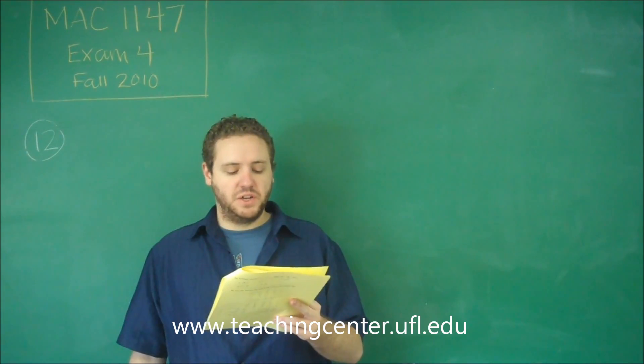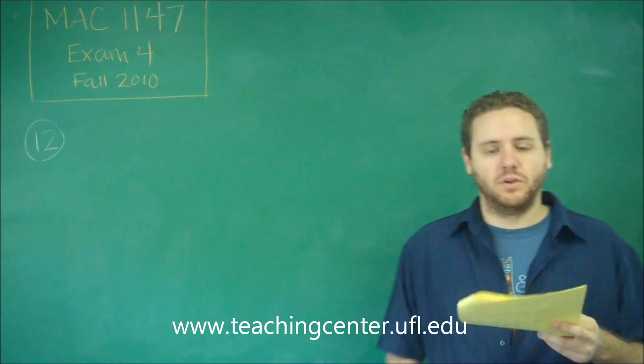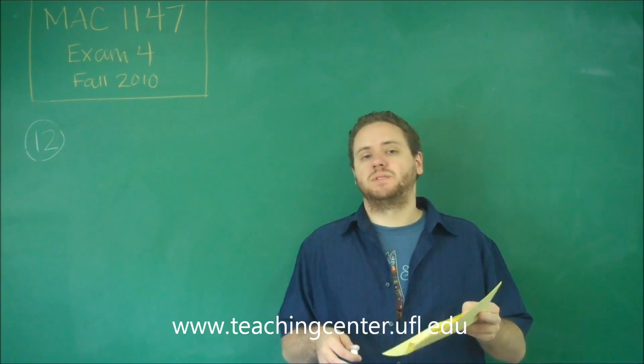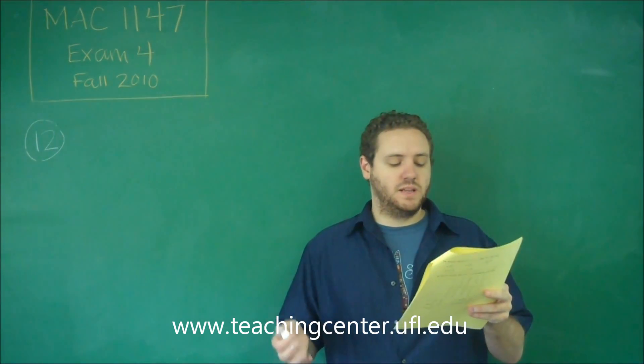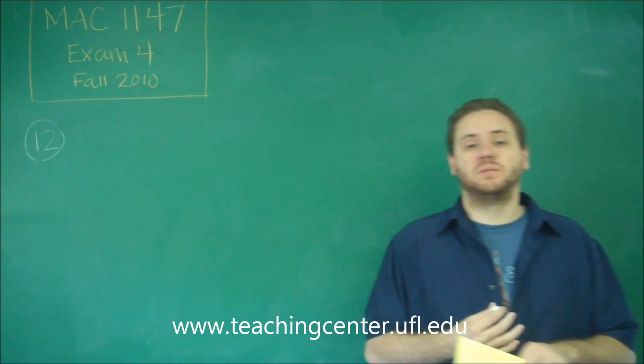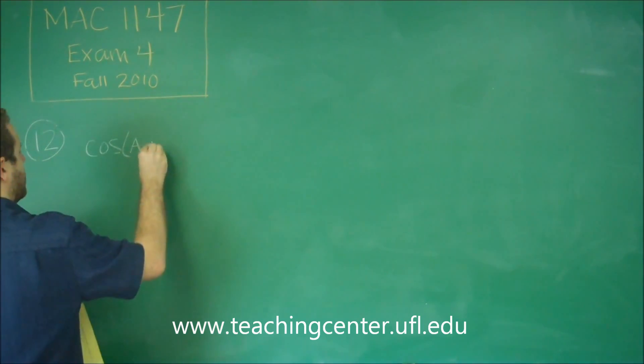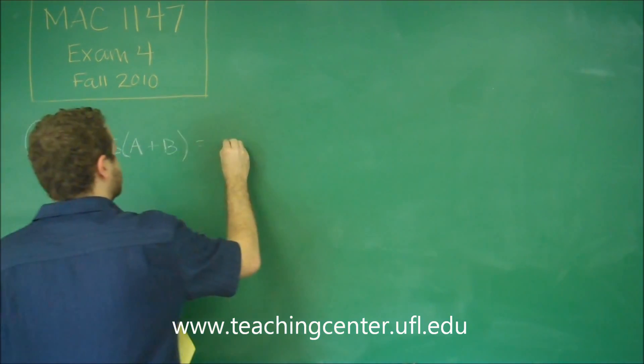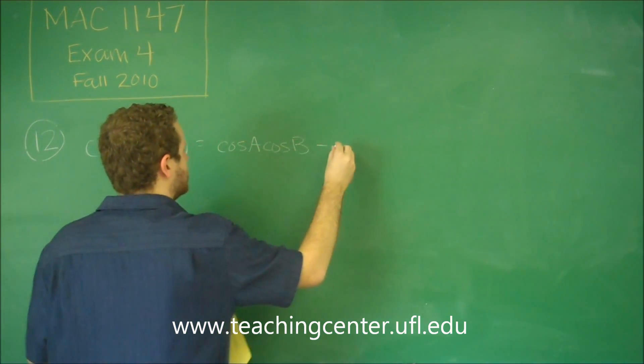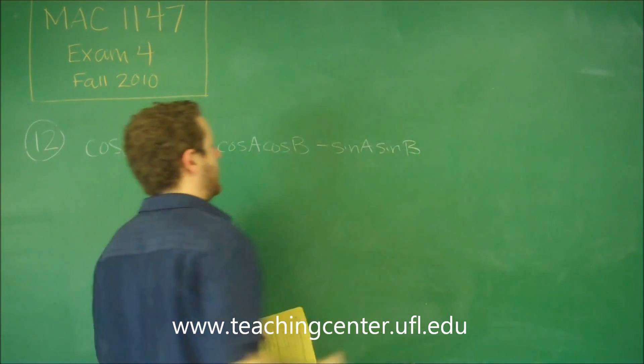For number 12, we have to evaluate a cosine with two arc functions added in the middle. Keep in mind that an arc cosine or arc sine of something gives you an angle, so this makes sense. We have cosine of some angle plus another angle, and for that we have to use the cosine addition angle formula. Remember that cosine of A plus B is equal to cosine A cosine B minus sine A sine B.